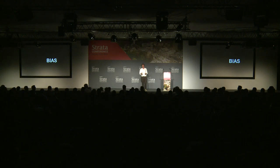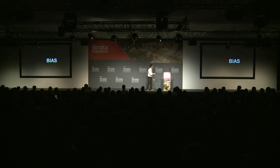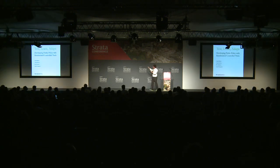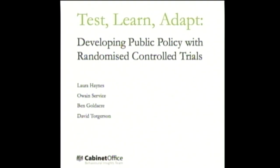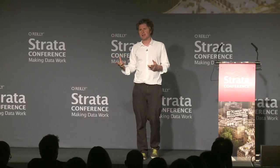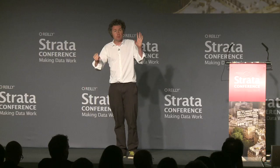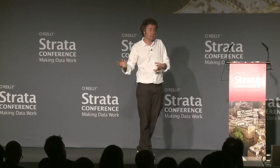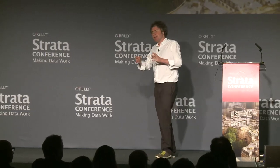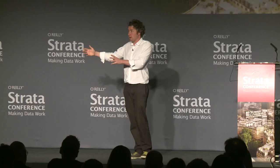Randomized trials are really important — they can stop you doing harm where you think you're doing good, and people can be very resistant to doing them. In government, there's a paper I helped write with smart civil servants called Test, Learn, Adapt, about using randomized trials in policy. The most elegant trial exploits routinely collected administrative data with a very cheap intervention: comparing slightly different reminder letters to get people to pay their tax bill or send in their tax form on time, then looking at the impact on when forms arrive — data that comes straight from HMRC.